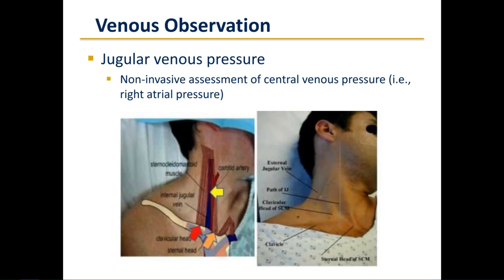Whenever beginning to assess jugular venous pressure, it's important to think about the anatomy of the neck. We want to think of the two bellies of the sternocleidomastoid muscle as well as the clavicular head, identifying the scalene triangle where we can recognize the course of the internal jugular vein and the carotid artery. We need landmarks to identify the scalene triangle and the course of the internal jugular vein. A prominent external jugular vein may be seen in patients that have normal right atrial pressure.